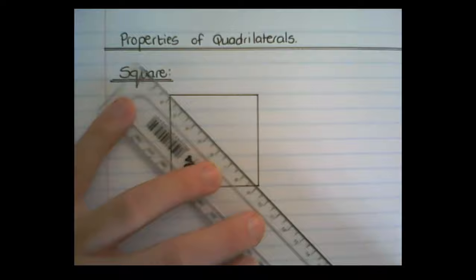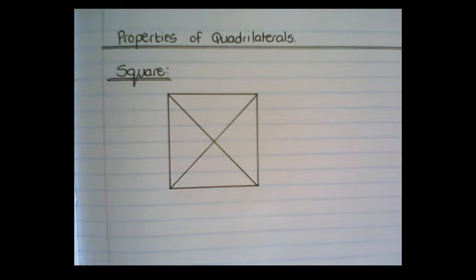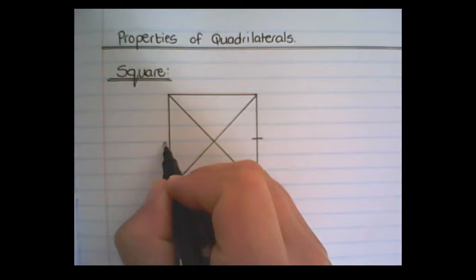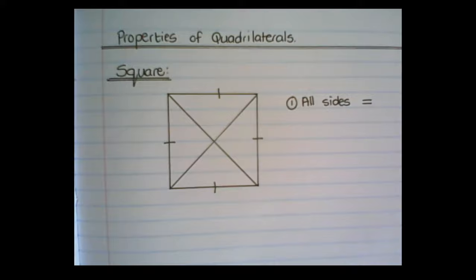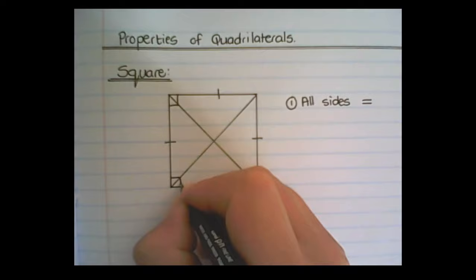The first property of the square that we learned in previous grades is that all four sides of the square are equal in length. The second property that we learned is that all of the interior angles are 90 degrees.